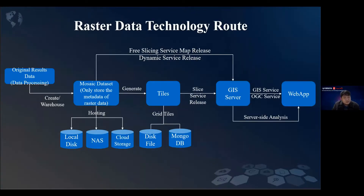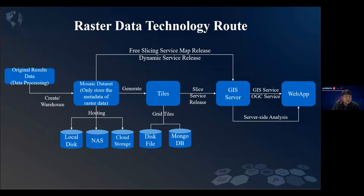If the above process corresponds to the technical route of raster data, it can be expressed as follows. After processing the original data, you need to create a mosaic data site and perform warehousing. The data can be stored in local disk, NAS, or cloud storage. Then we can choose two technical routes: one is slice-free publishing service, and the other is generating tiles or cache and then publishing a service. Finally, the GIS services can be used for the construction of web applications.